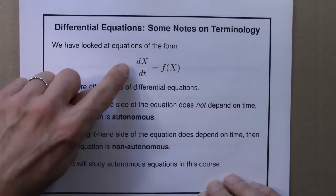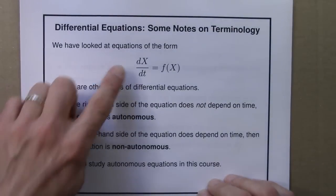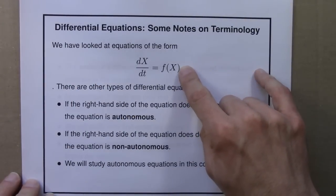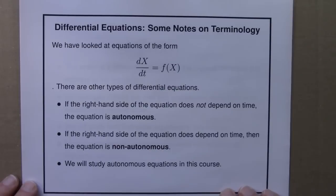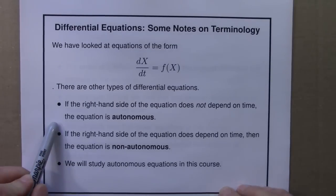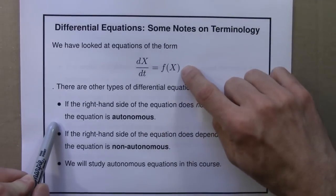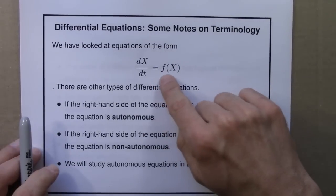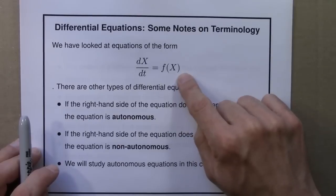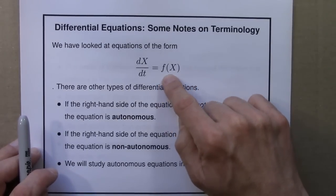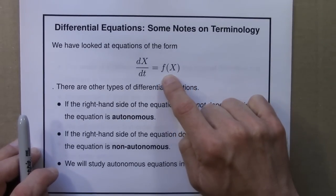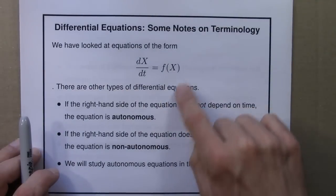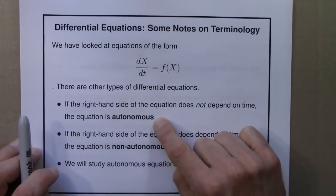So far, we've looked at equations of this form, dx/dt is some function of x. But there are other types of differential equations and some vocabulary and terminology associated with these different types that I think we should go over. So, if the right-hand side of the equation does not depend on time, that's the case here. The derivative is a function just of x. How fast the cold beer is warming up is a function only of the temperature of the beer. For such a situation, we say that the equation is autonomous.